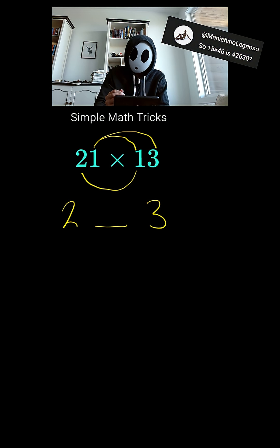Then we multiply the 2 inside numbers, 1 times 1 is 1, and we add the 2 numbers on the outside, multiply together. So 2 times 3 is 6, 1 plus 6 is 7, so it's 273.